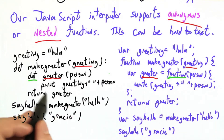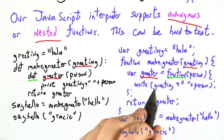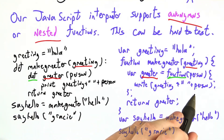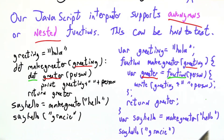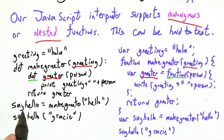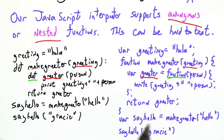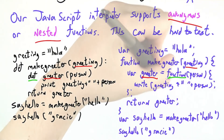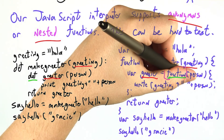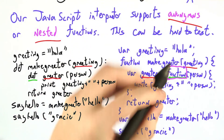The argument person is the same. Instead of print, we call document.write, and we return the greeter. The variable sayHello is the result of calling makeGreeter on hello, and then we call it at the end.